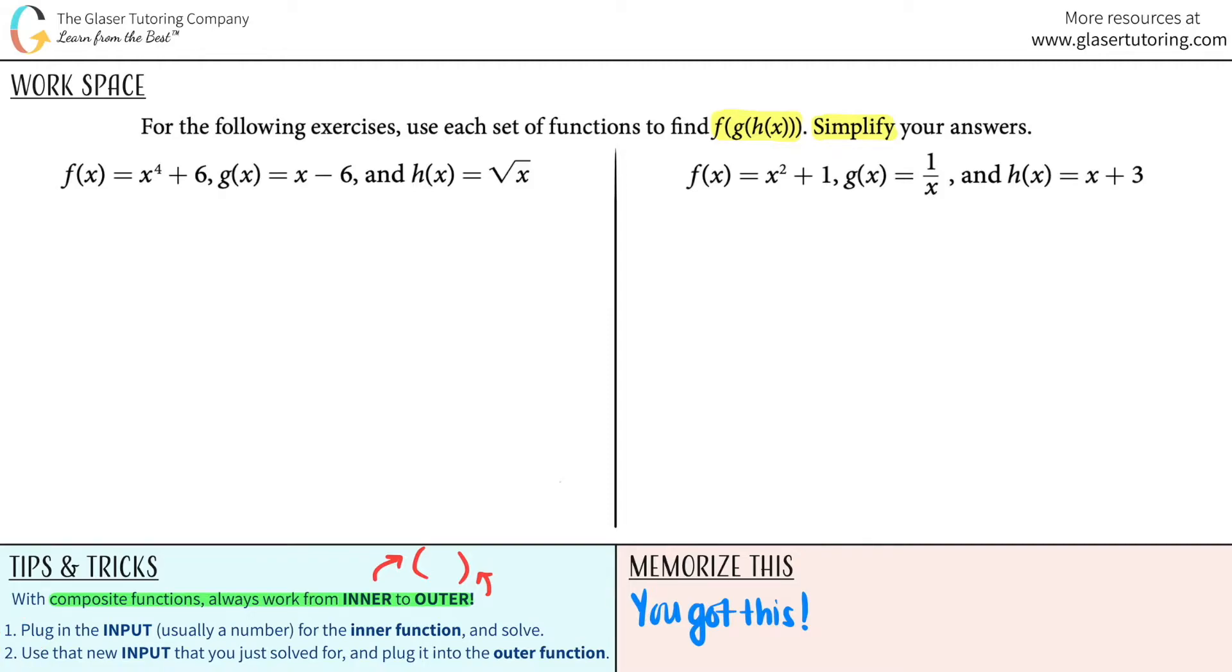So I'm gonna just title this f of g of h of x. There's three parentheses. One, two, three. Yeah, so I need one more. Okay, so first let's identify who is the most innermost function. Is it the f function, the g, or the h? It's the one that's in the parentheses. It's the h function.